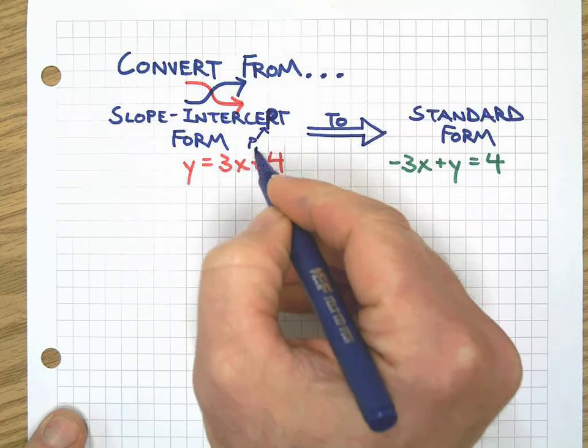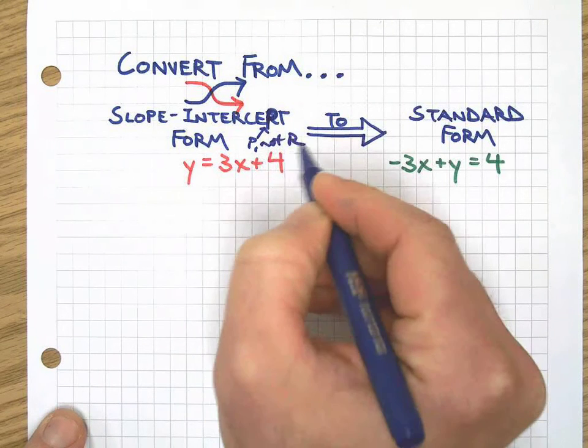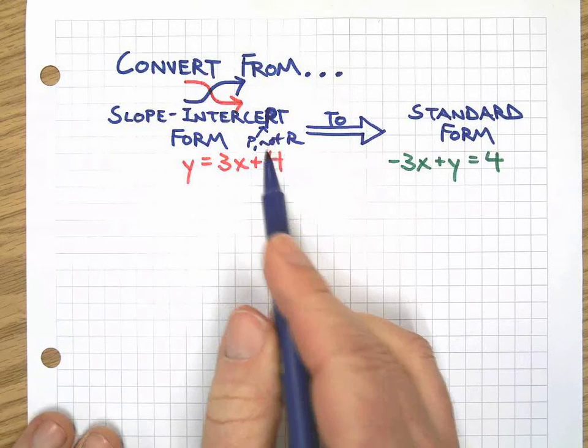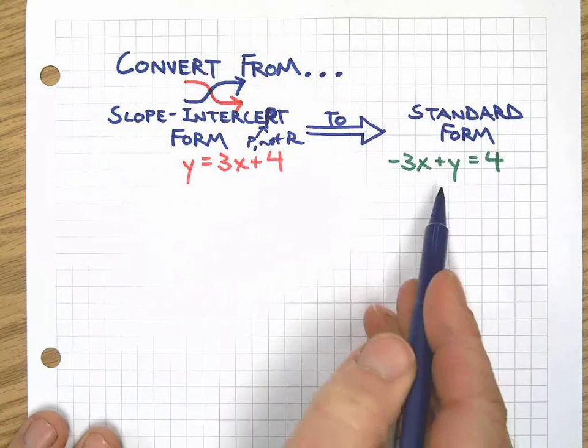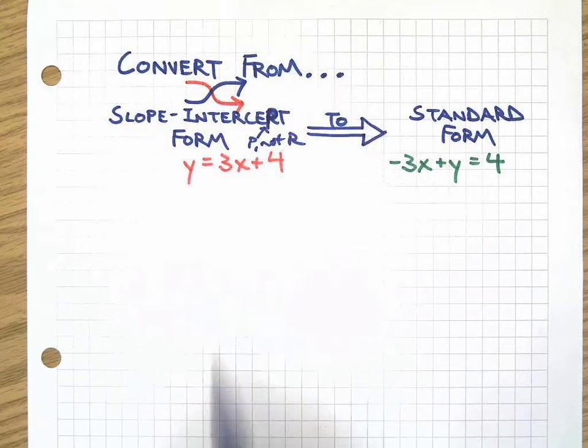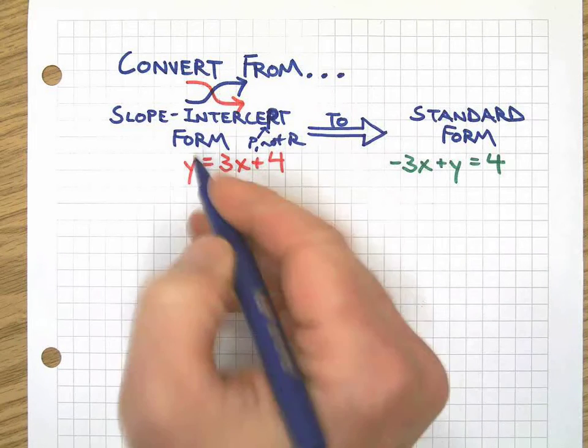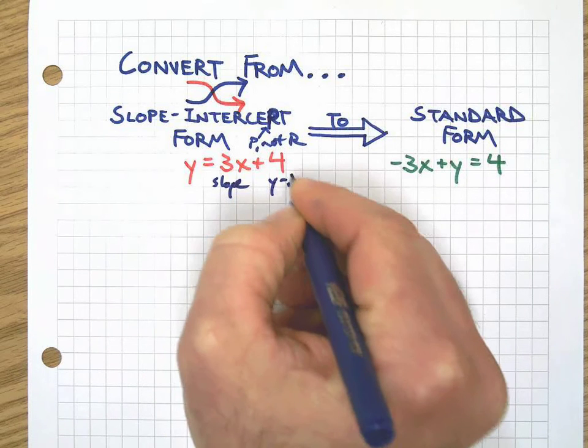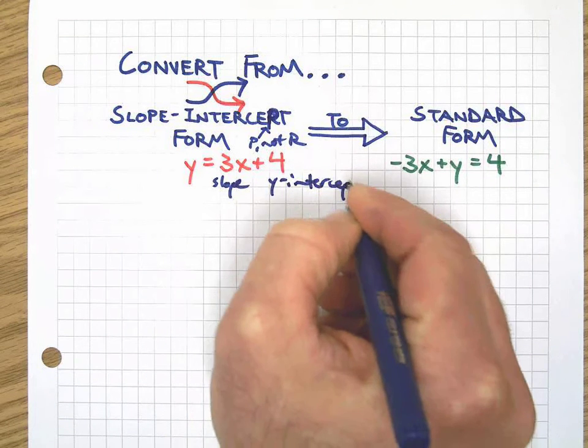Anyway, slope-intercept form to standard form. Slope-intercept looks like that because that's the slope and that's the y-intercept. That's why it's called that.